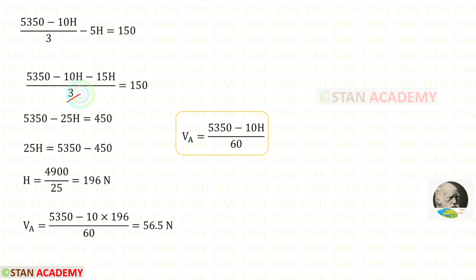We can take 3 on the other side. 150 times 3 gives 450. Minus 10H minus 15H gives minus 25H.